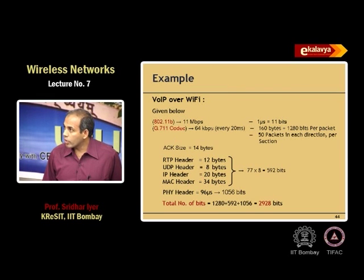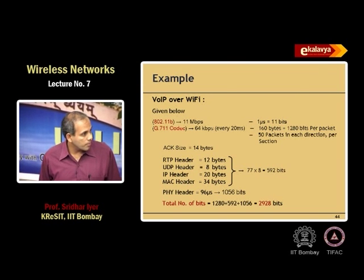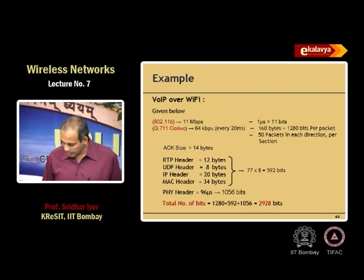That implies that approximately in 1 microsecond you are going to transfer 11 bits. And we are using a G711 voice codec which samples at the rate of 64 kbps every 20 milliseconds. Now, 64 kbps every 20 milliseconds translates to 160 bytes per packet.